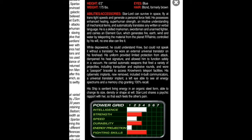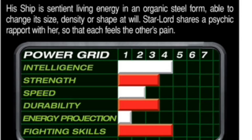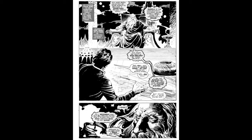Classic Star-Lord legitimately has superpowers. It is stated that Star-Lord can survive in space, fly at trans-light speeds, and generate a personal force field. He also possesses enhanced healing, superhuman strength, intuitive understanding of mechanical items, and can automatically translate any written or verbal language. He is a skilled marksman, swordsman, and unarmed fighter, and carries an element gun which generates fire, earth, wind, and water by teleporting the material from planet Ramiel, controlled by his will — no one else can fire it.